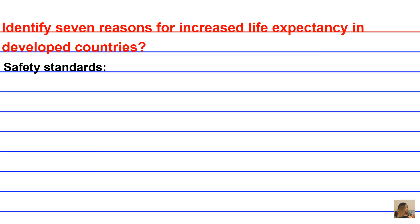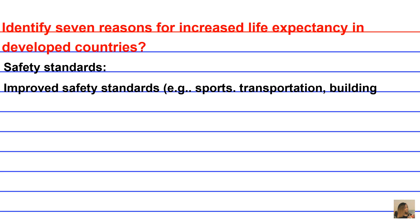The last major reason for increased life expectancy has to do with safety standards — improved safety standards. This is ubiquitous across so many industries: work, sports, transportation, building codes, you name it. These are law-mandated safety standards.